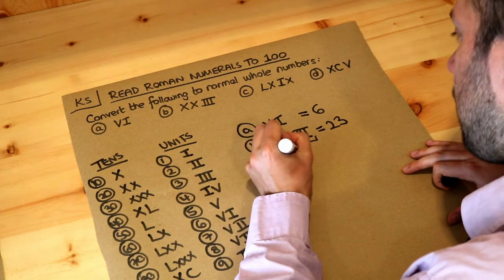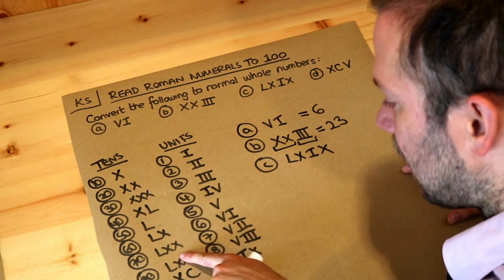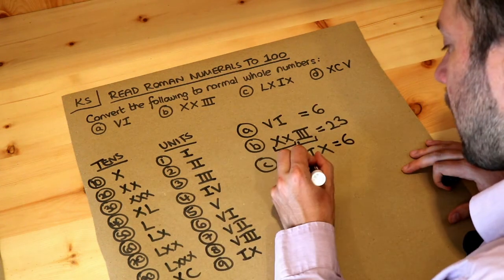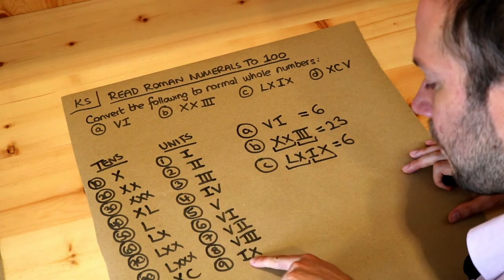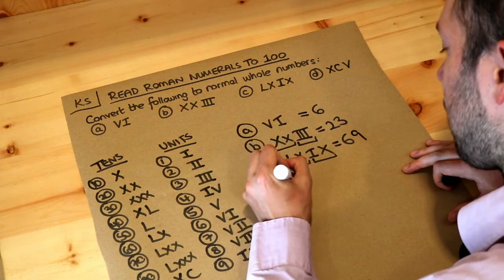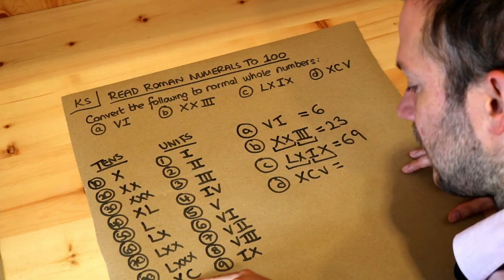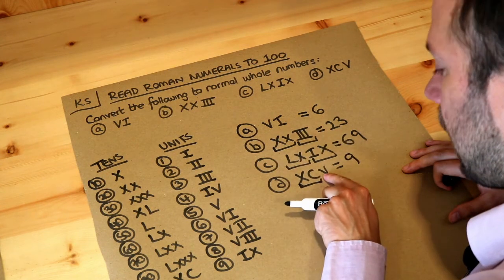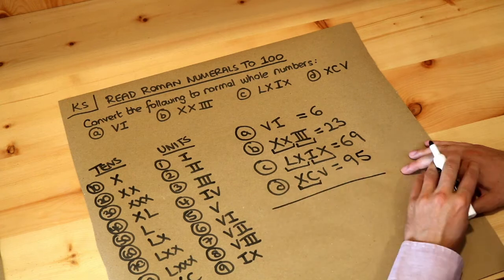What about lix? We've got l, which is fifty, and then ix, which is nine. So it's 59. And then xcv: well, xc is 90, and then v is 5 in the units column, so it's 95. And that's the final answer.